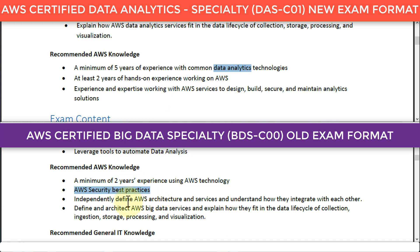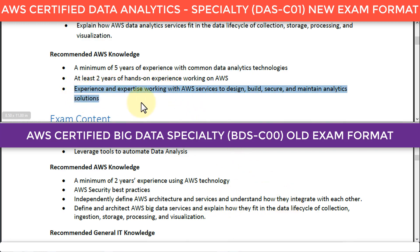In the old exam, you needed to independently define AWS architecture and services and understand how they integrate — pretty similar to the Solutions Architect. In the new exam, you simply need experience and expertise working with AWS services to design, build, secure, and maintain analytics solutions — with just a touch of solutions architect thinking, though it is not a requirement.